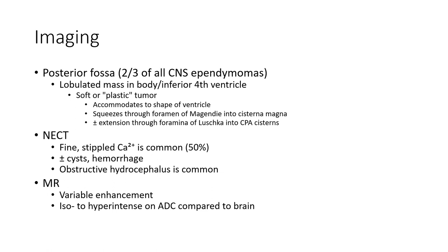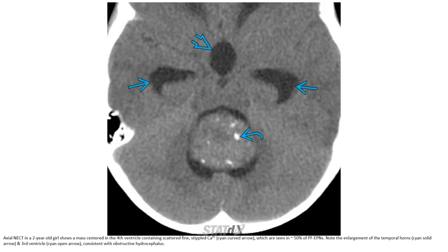Variable enhancement. This is a non-contrast enhanced CT in a two-year-old child. The mass is centered in the fourth ventricle containing scattered fine stippled calcification, which is seen in 50% of posterior fossa ependymomas. Note the enlargement of the temporal horn and third ventricle, consistent with obstructive hydrocephalus.